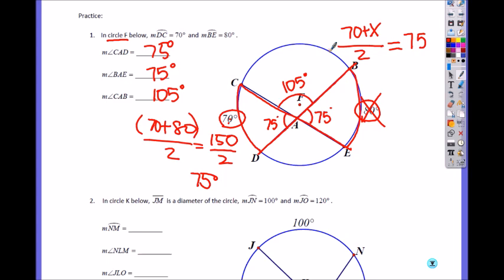You multiply by 2 on both sides and then 70 plus 8, X is 150. Then you can subtract 70 to get the other arc.